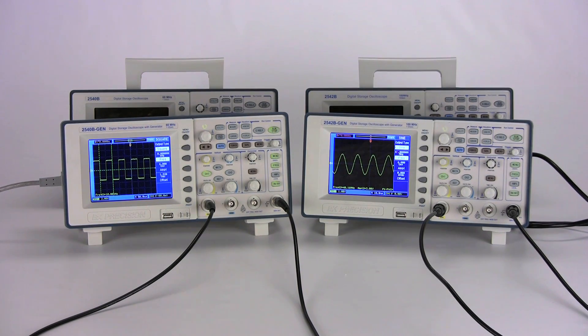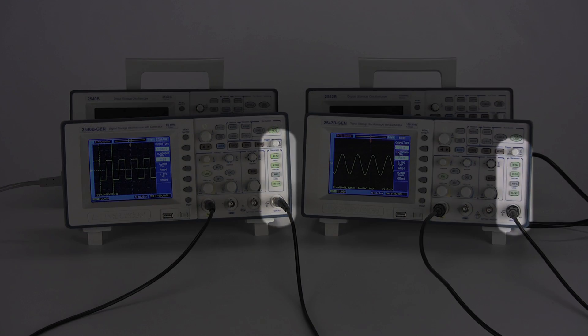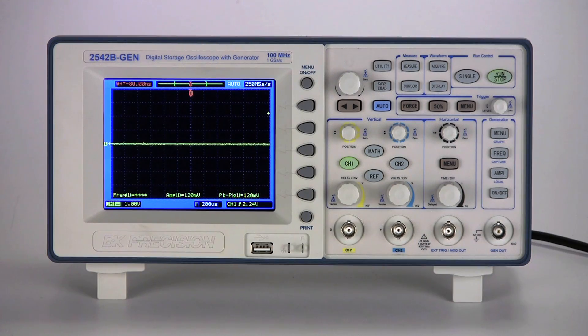Models 2540B-Gen and 2542B-Gen add built-in 20 MHz and 40 MHz arbitrary waveform generators, providing the convenience of an oscilloscope and signal generator combined in one instrument.